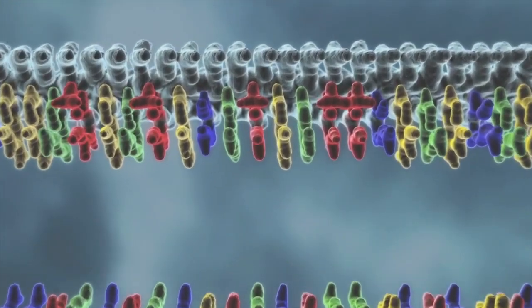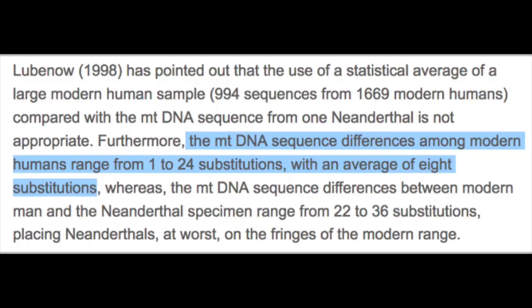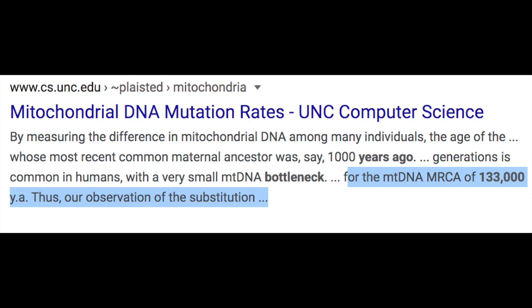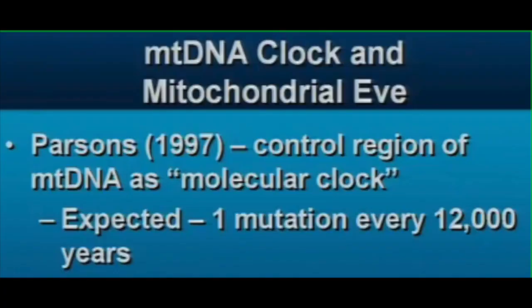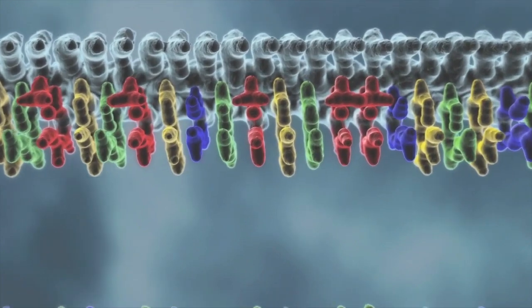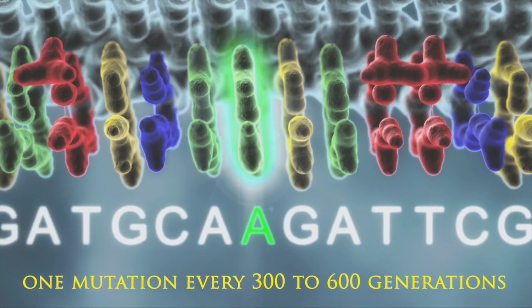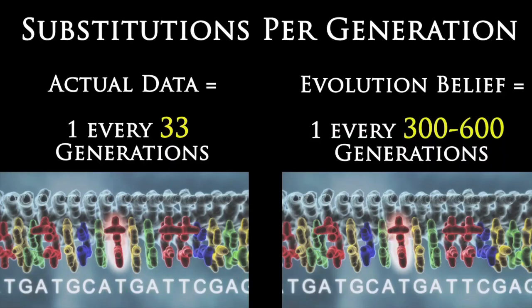We can also look at substitution rates because those are easier to count. Evolutionists looked in the human genome and discovered that all of humanity only has 24 fixed substitution differences between them. Because they believed in evolution, they made a prediction based on this new evidence. Back in the 90s when they discovered this, they believed that the last bottleneck was 133,000 years ago. So based on this assumption, they assumed that one substitution must occur every 12,000 years if evolution is true, or one mutation every 300 to 600 generations. What did they discover? We discovered that there's one substitution every 33 generations, again going back only about 6,500 years.